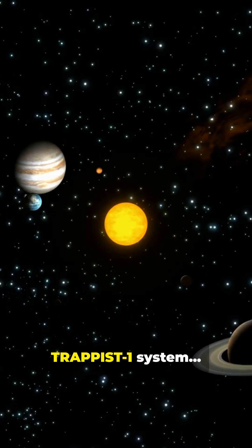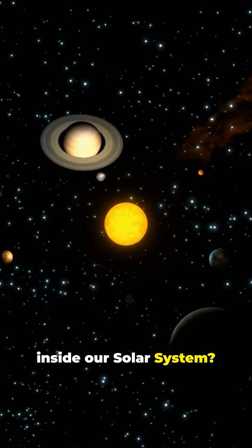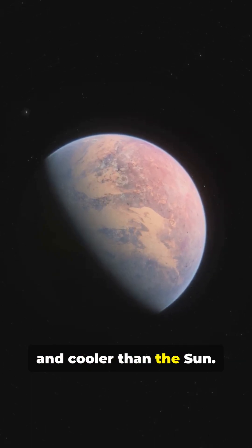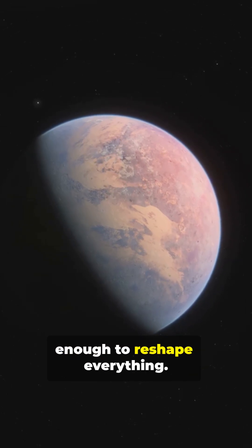What would happen if the entire TRAPPIST-1 system suddenly appeared inside our solar system? TRAPPIST-1 is a red dwarf, much smaller and cooler than the Sun. But its gravity would be powerful enough to reshape everything.